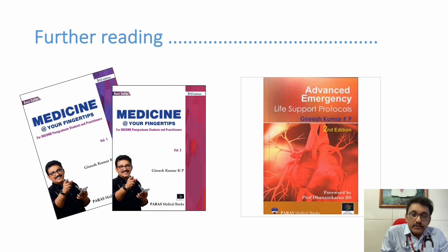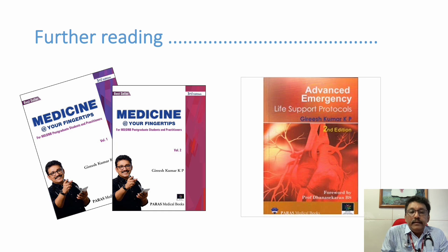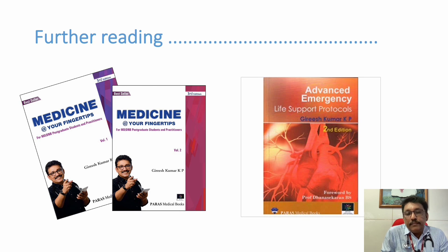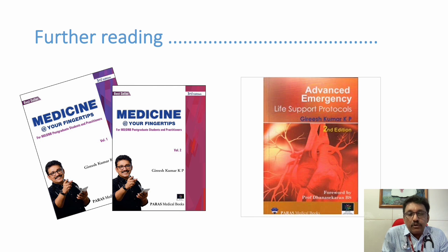In summary, pulmonary embolism is an important emergency topic. It can present exactly like pneumonia, so a very high index of suspicion is required. Treatment is primarily heparin; patients with massive pulmonary embolism or hemodynamic instability may require thrombolysis or embolectomy. Thank you.